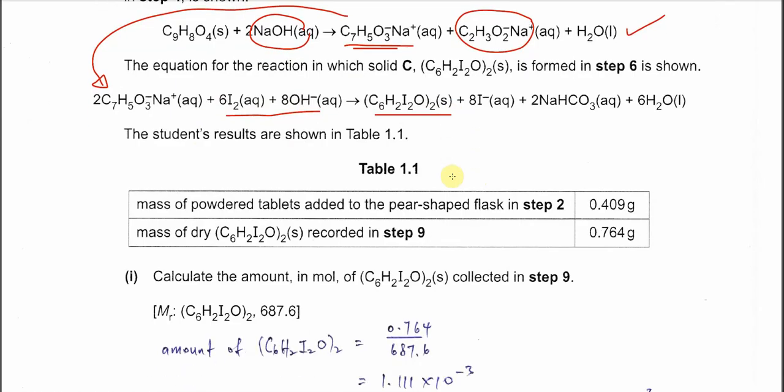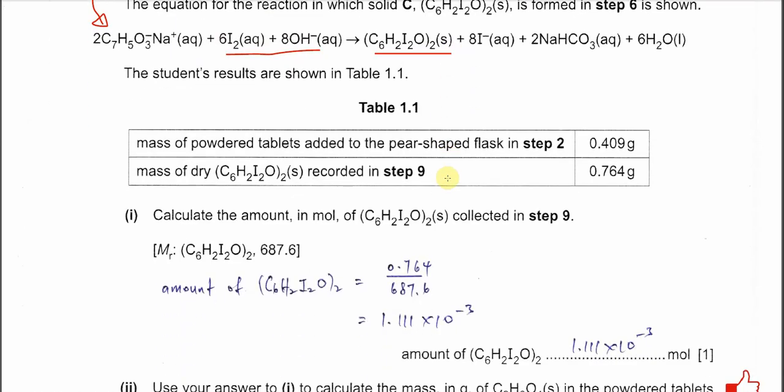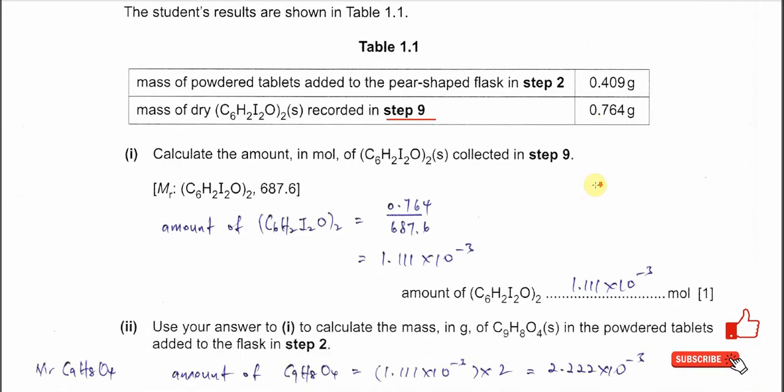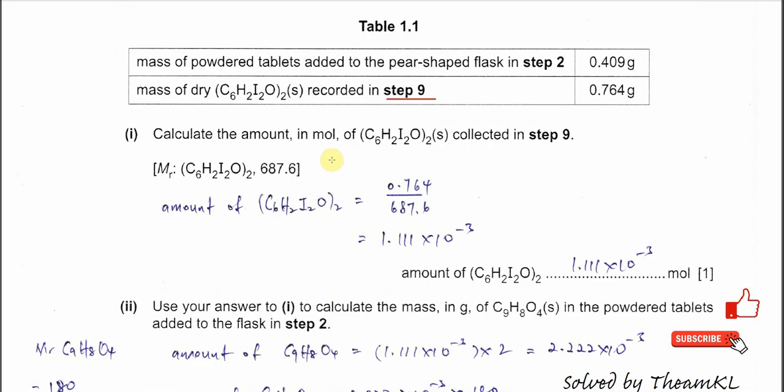The alkaline iodine solution forms solid C. Let's see the values in Table 1.1. The mass of powdered tablets added to the pear-shaped flask in step 2 is 0.409 grams. Mass of dry solid C recorded in step 9, the last step, is 0.764 grams. Part 1, calculate the amount of solid C collected in step 9. This is very easy, molar mass is given. You just use the mass 0.764 over the molar mass, you should get 1.111 times 10 to the power of negative 3.